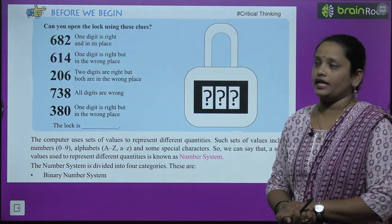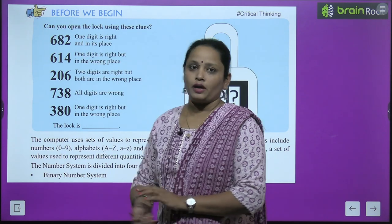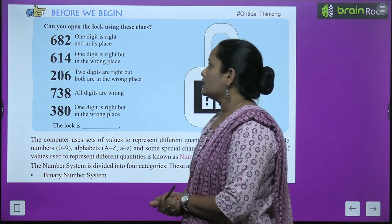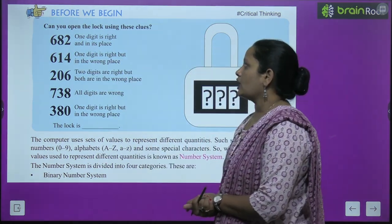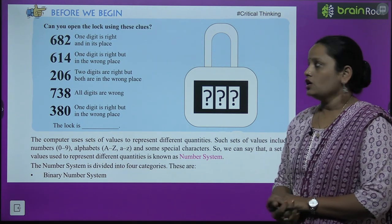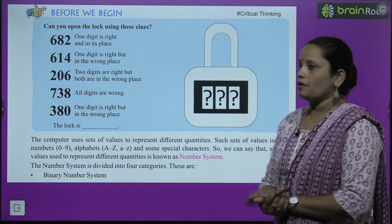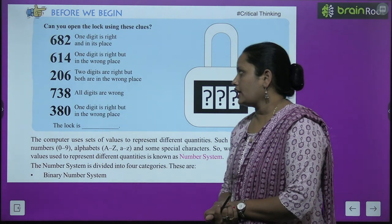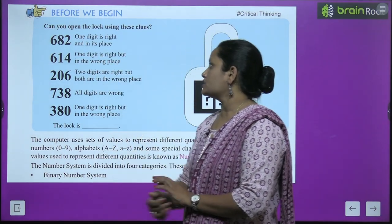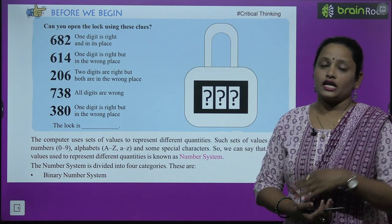Can you open the lock using these clues? Let's read them. The first code is 682 — one digit is right and in its place. Next is 614 — one digit is right but in the wrong place.